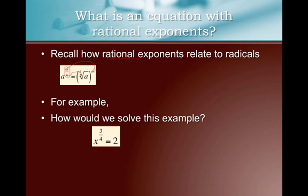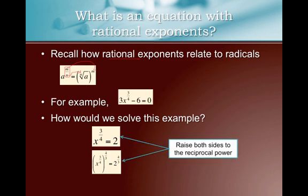So how would we solve this example: x to the three-fourths equals two? What we want to do is raise both sides to the reciprocal power. Since the original fraction is three-fourths, we raise both sides to the four-thirds power. The reciprocal powers undo each other — a power raised to a power means we multiply, and three-fourths times four-thirds equals one. That equals two to the four-thirds.